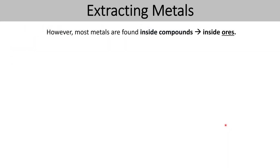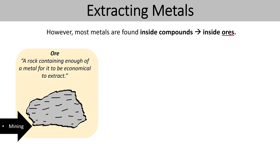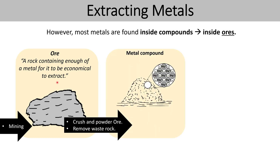However, most metals are found inside compounds — inside what we call ores. The definition of an ore needs to be learned: it's a rock which contains enough of a metal for it to be economical to extract, meaning that if you were to extract the metal and sell it, you'd at least get a profit. Inside the ore, if you crush and powder it and remove any waste rock, you'd be left with a compound of the metal — for example magnesium oxide, iron oxide, or copper oxide.